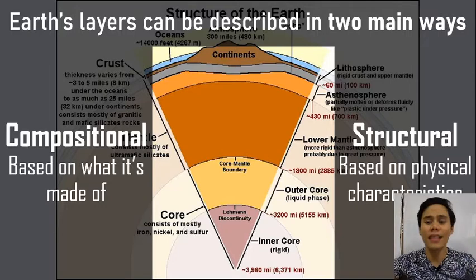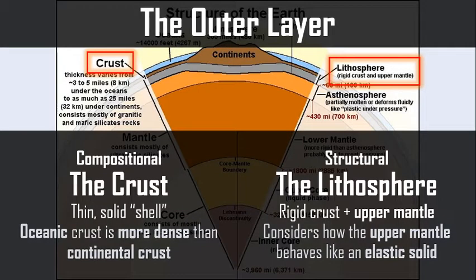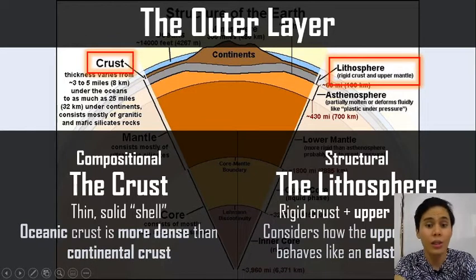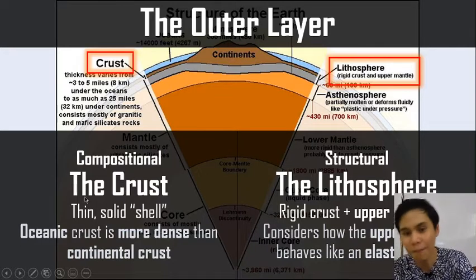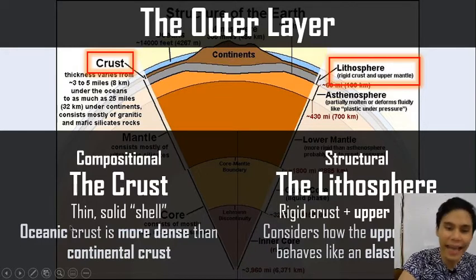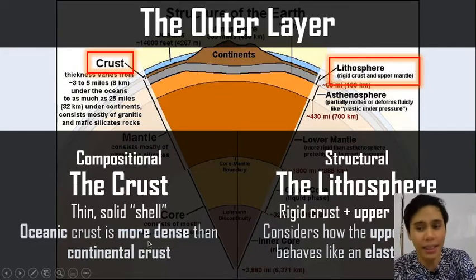Earth's layers can be described in two main ways: compositional and structural. Composition is based on what it's made of; structural is based on the physical characteristics. In the compositional description, the outer layer is the crust — a thin, solid shell. If you think of the Earth as an egg, it's the egg shell. We have dense oceanic crust and less dense continental crust.